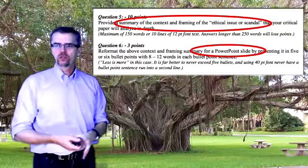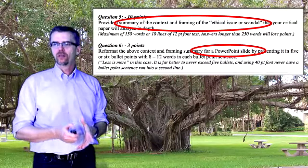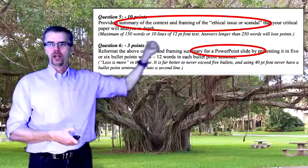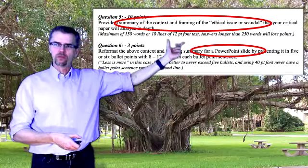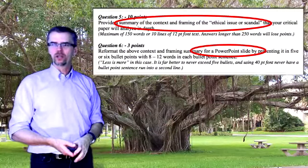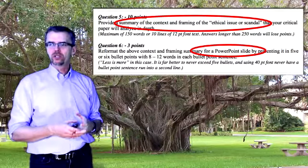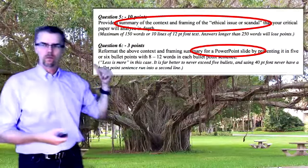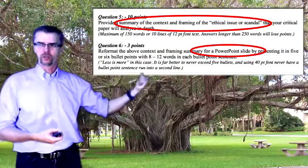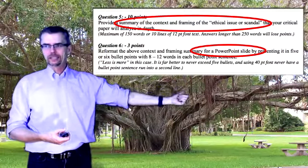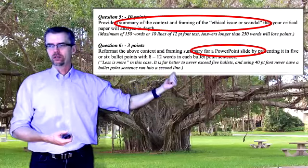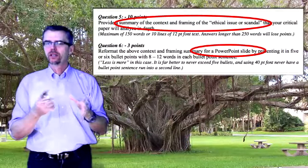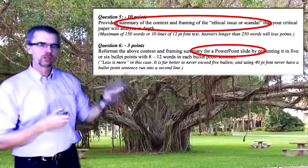Question number five on the quiz asks you to provide a summary of the context and framing of the ethical issue or scandal that your critical paper will analyze in depth — again, 150 words maximum. Question number six asks you to reformat that context and framing summary for a PowerPoint slide by presenting it in five or six bullet points with eight to twelve words in each bullet point sentence. Less is more — it is far better to never exceed five bullet points, and using 40-point font, never have a bullet point sentence run into a second line.